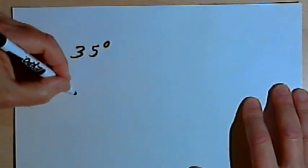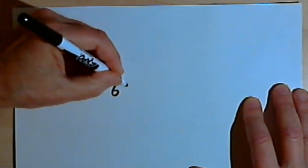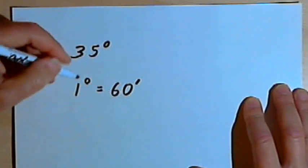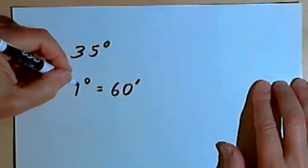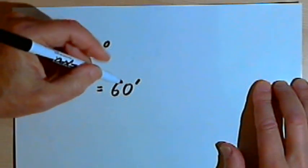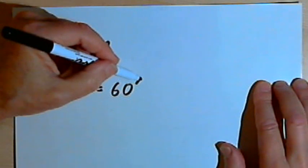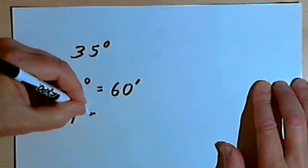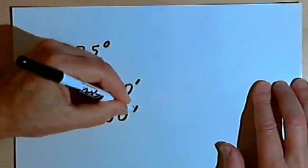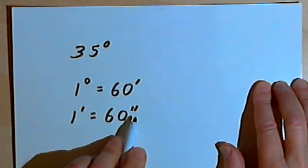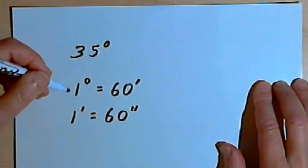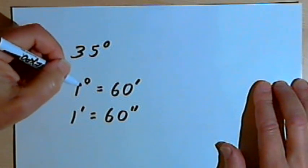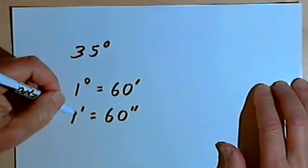Angles are measured in degrees — we might have an angle of 35 degrees. One degree can be broken down into 60 smaller units called minutes, written with an apostrophe after the number. Minutes can further be broken down into 60 smaller units called seconds, written with two apostrophes. This is easy to remember: one degree is 60 minutes, just like one hour is 60 minutes, and one minute is 60 seconds.